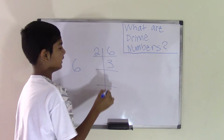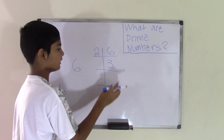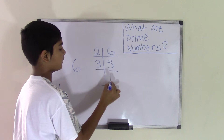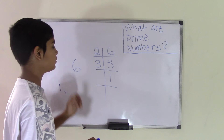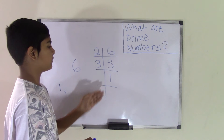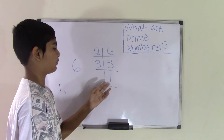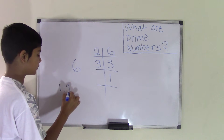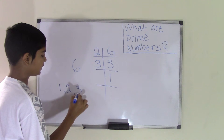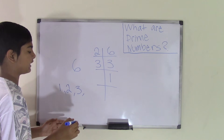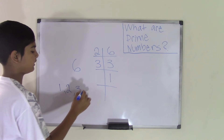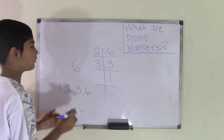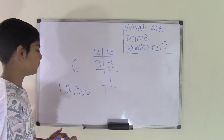The number 2 goes into 6 three times, giving us 3. Then 3 equals 3 times 1, so 1 is the smallest we can break it down to. So we have two additional factors: 2 and 3. And you always know that 6 itself is also one of the factors.